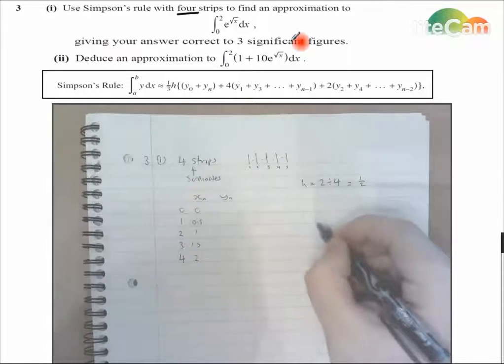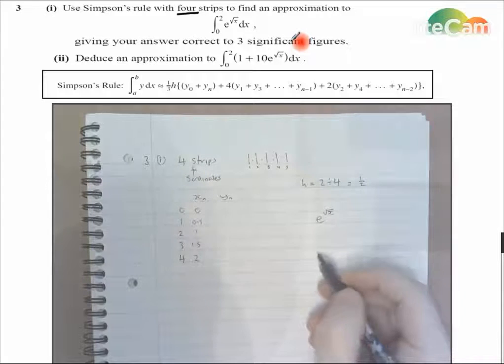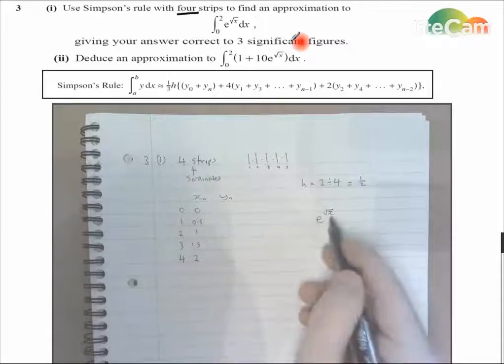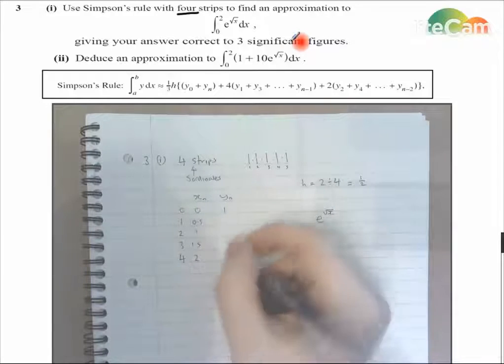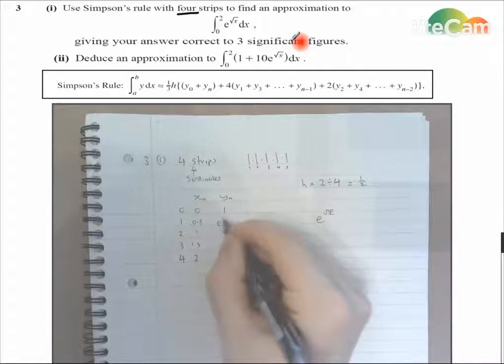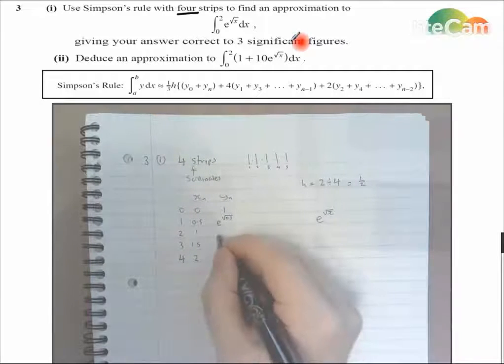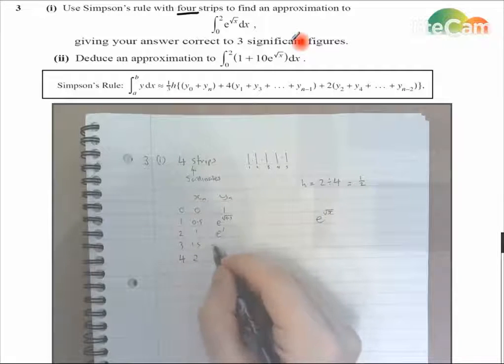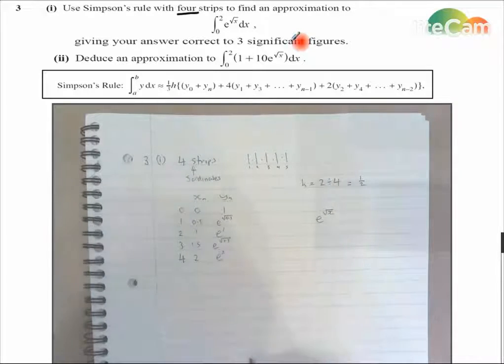Okay, let me just write my function here for quick reference. We're doing e to the root x. So we're going to have e to the 0, which is 1. We're going to have e to the root 0.5, which we can't work out without a calculator anyway. We're going to have e to the 1, e to the root 1.5, and e squared. Okay, these are the values we're going to put into the formula.